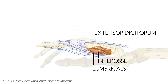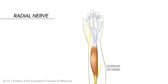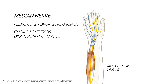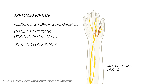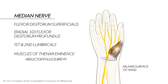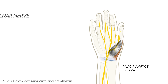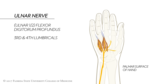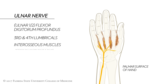Before moving on to discuss common clinical deformities of the hand, let's review the nerves that innervate the muscles important for moving the digits. The radial nerve innervates the extensor digitorum muscle. The median nerve innervates flexor digitorum superficialis, the radial one-half of flexor digitorum profundus, and the first and second lumbrical muscles. In addition, the median nerve innervates the three muscles of the thenar eminence that move the thumb: abductor pollicis brevis, flexor pollicis brevis, and opponens pollicis. Finally, the ulnar nerve innervates the ulnar one-half of flexor digitorum profundus, the third and fourth lumbricals, all of the interosseous muscles, and adductor pollicis.